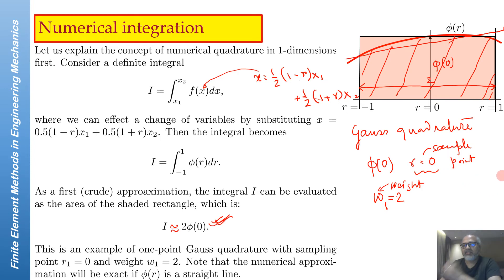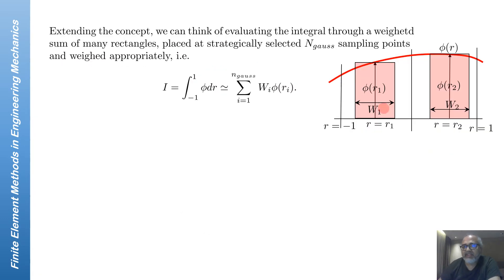Generalizing this, instead of doing a one-point Gauss quadrature, we can do a two-point Gauss quadrature where we sample the value of the function at R1, so phi(R1) is the sampled functional value, and phi(R2) is the sample functional value at the second sampling point. Then at each of the sampling points, we fit two thinner rectangles of width w1 and w2 so that the total area of these two rectangles is equal to the area under the curve.